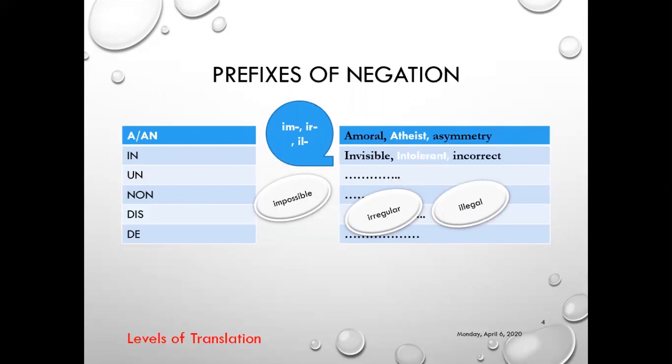The same process could be used in Arabic and in all languages. When we have a 'n' sound followed by a 'p' sound, we merge both together: 'impossible,' like 'minba' in Arabic; 'irregular,' like 'mirrabbihim' in Arabic; 'illegal.' So in this pattern, we can think logically about languages.